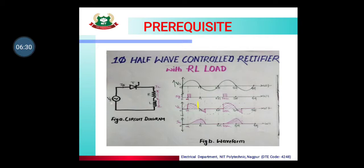The angle at which we give the gate pulse is called alpha. Before alpha — from 0 to alpha — no gate pulse is given, so the load voltage is 0 and the load current is also 0. At omega-t equals alpha, we apply the gate pulse, so the SCR turns on and current starts to flow through it. As long as the SCR is on, the input voltage appears across the load.